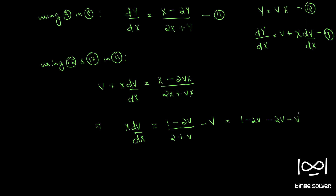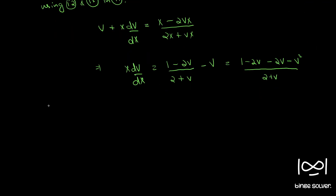Simplifying, X dv/dX equals (1 minus 4v minus v squared) by (2 plus v). This is a form where we can use the method of separation of variables.